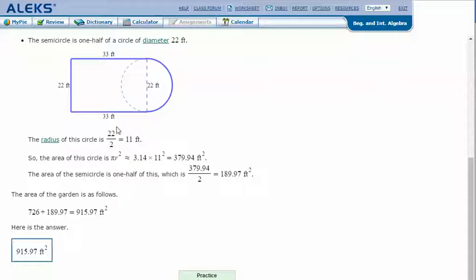The radius of this circle is 22 divided by 2, which equals 11. So the area of this circle, with the formula πr², is 3.14 times 11 squared, which equals 379.94 feet squared. That's for a circle. Since it's only a semicircle, we divide it by 2, which gives us 189.97 feet squared.